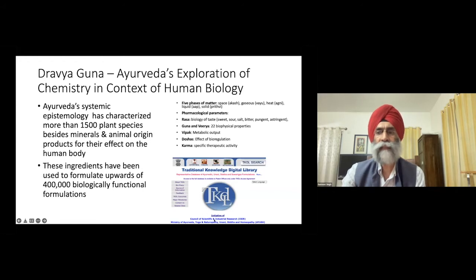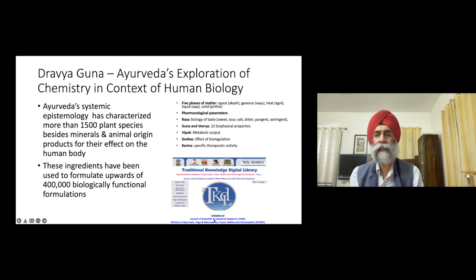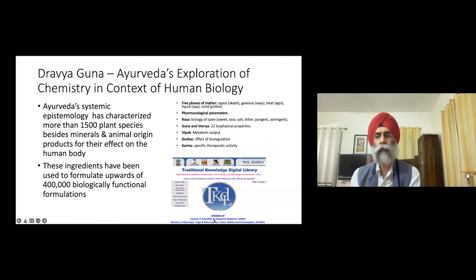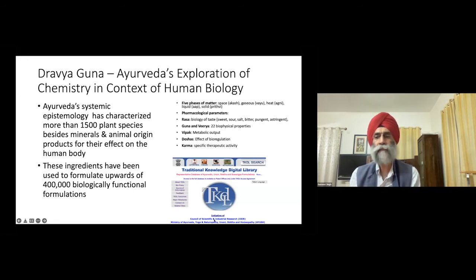Ayurveda uses a multi-scale framework, defining ingredients in terms of their five phases — space, air, fire, liquid, solid — and then characterizing them by the in-mouth experience called rasa in Sanskrit: sweet, salt, sour, bitter, astringent, and pungent. These in-mouth experiences lead to 11 pairs of biophysical properties — how these materials would behave within the human body: whether they'll be light or heavy, heating or cooling, dry or unctuous, smooth or rough, thinning or thickening. This leads to their potency and their post-digestive metabolic effect, eventually building up to effect on doshas or bioregulation, and finally to their specific therapeutic activities. These 1500 ingredients have been used to formulate more than four lakh biologically functional formulations, curated in the Traditional Knowledge Digital Library by the Indian government's CSIR.